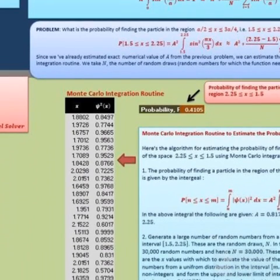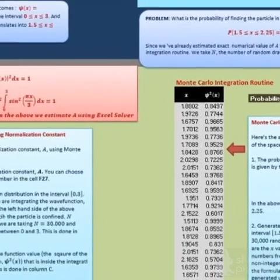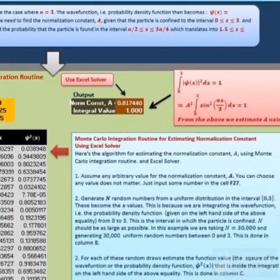We see here Monte Carlo integration routine, and here is the probability. This is the probability of finding the particle between two points given by 2.25 and 1.5. We are just evaluating the definite integral between these two points, the definite integral of the wave function. And here is the normalization constant, which has been estimated from this formula.